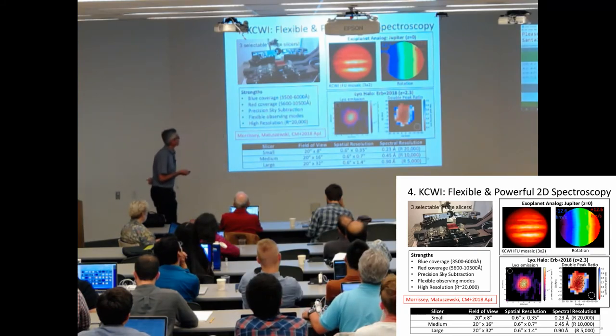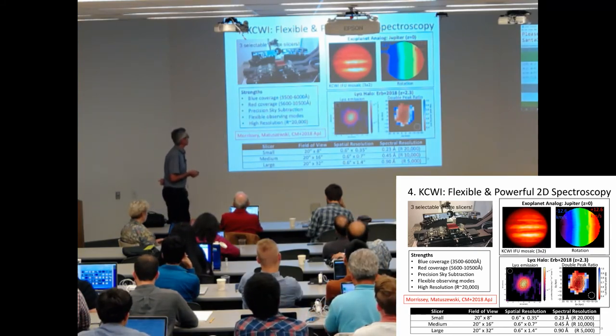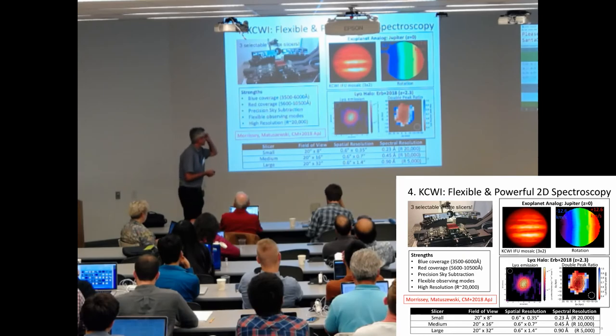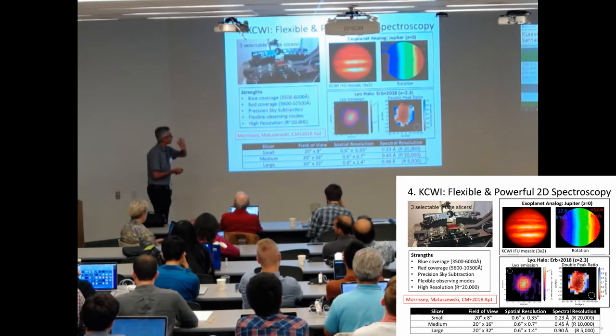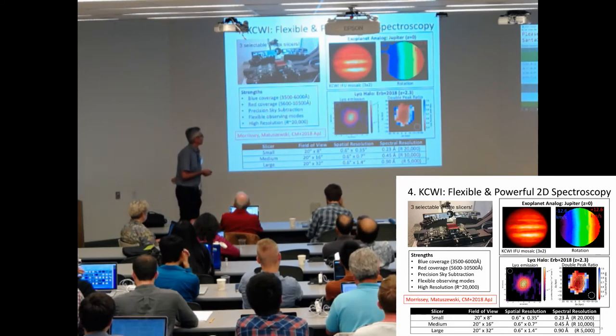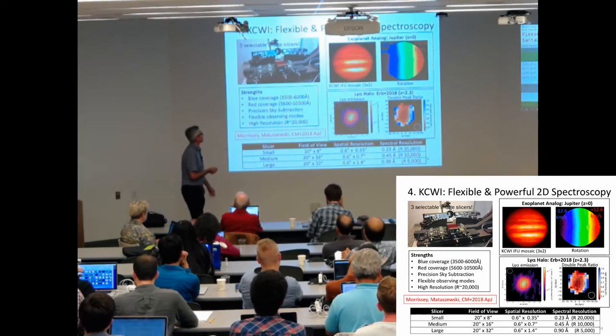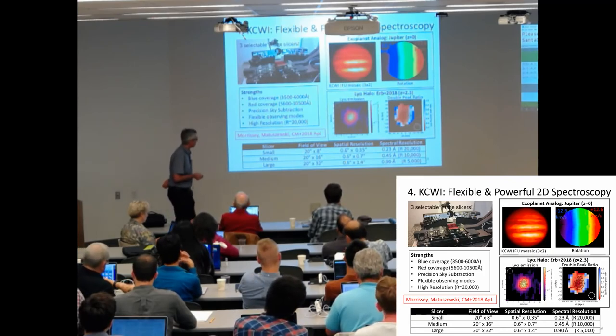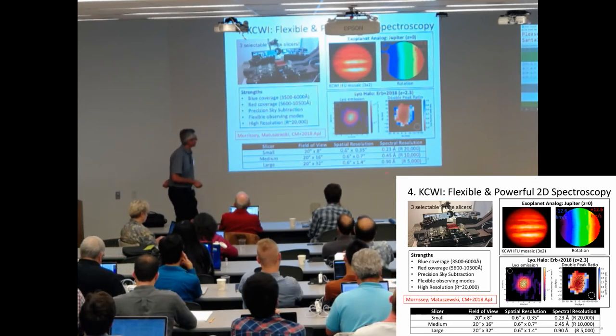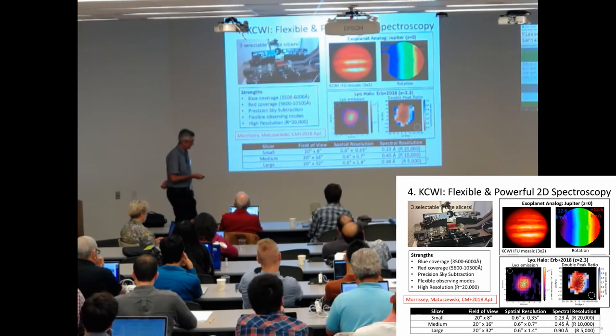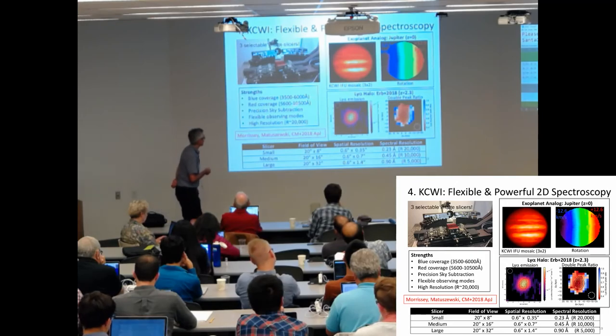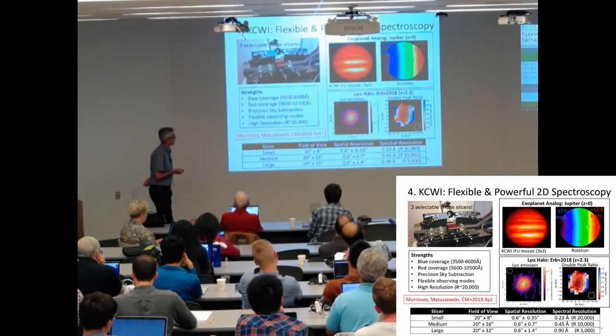So now, turning to KCWI. It was commissioned last spring, and it occupies a different sort of parameter space than MUSE, in the sense that it's focused on being a very flexible, versatile instrument to provide support for a wide range of science cases, ranging from this z equals zero object, exoplanet analog, to Lyman-alpha halos in high-redshift galaxies. And it does this with multiple slicers, multiple gratings, resolutions ranging from 1,000 to 20,000, excellent blue coverage, and ultimately excellent red coverage, out to basically 11,000 angstroms, redshift of 8 for Lyman-alpha.